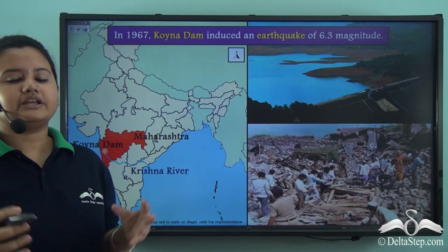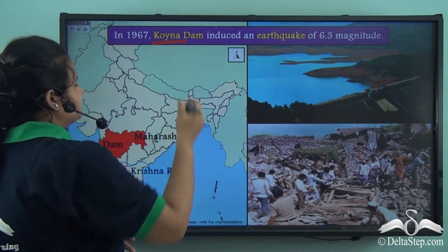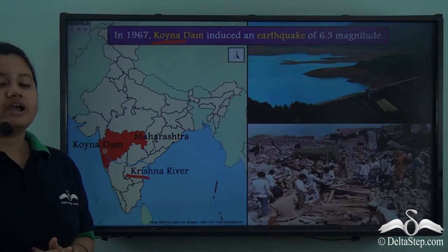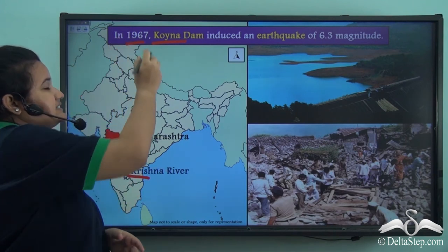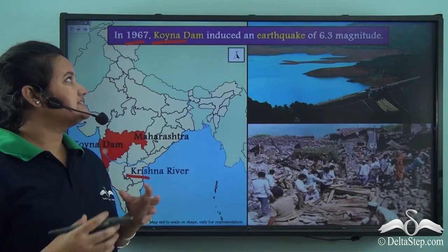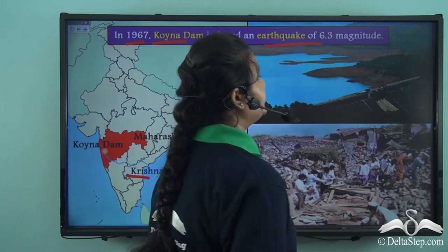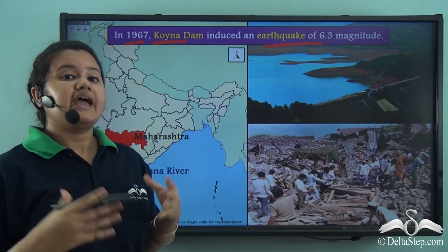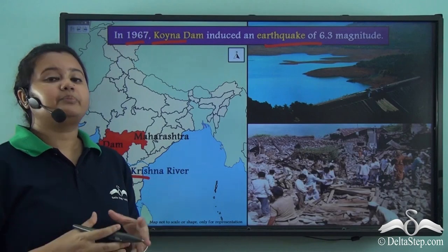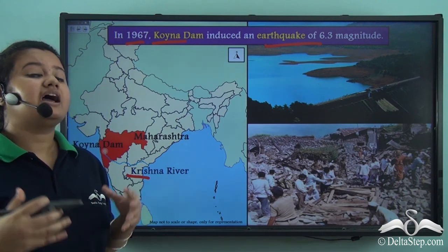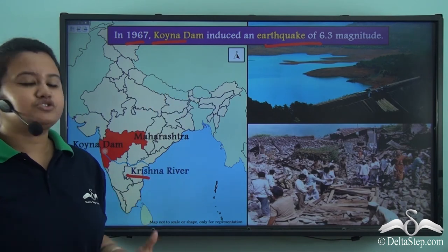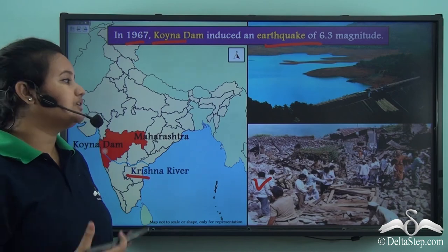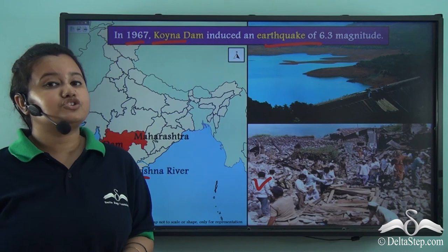Here is an example of a human-induced earthquake. Koena Dam is situated on river Krishna in the state of Maharashtra. This region was considered a stable region, but an incident in 1967 shattered this belief. The dam induced an earthquake of 6.3 magnitude. The water present in the reservoir exceeded its carrying capacity, and the excessive water caused stress on the earth's surface, triggering this earthquake. It was very deadly, taking many lives and causing immense damage to life and property.